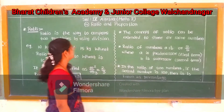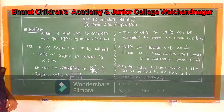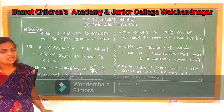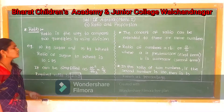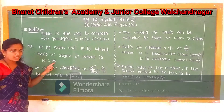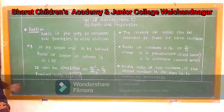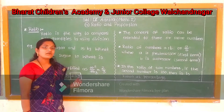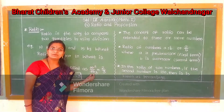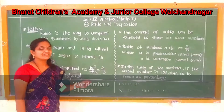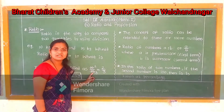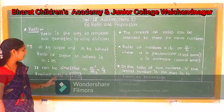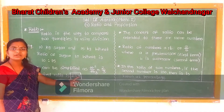Let's have an example. Suppose we want to compare two quantities: 10 kg sugar and 15 kg wheat. So let's get their ratio as 10 is to 15. It can be simplified as 10 upon 15. What is the common divisor for 10 and 15? It's 5. So 5 threes are 10, 5 threes are 15 — giving us 2 upon 3 as the simplest ratio, represented finally as 2 is to 3.